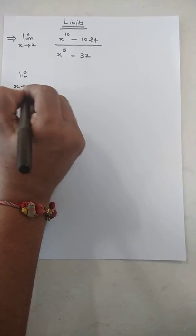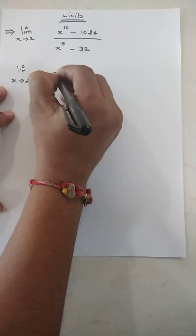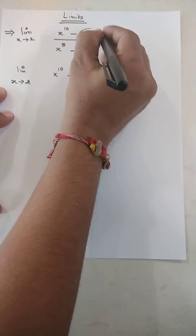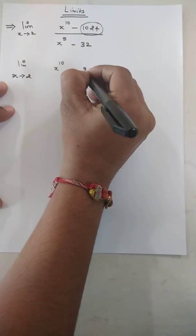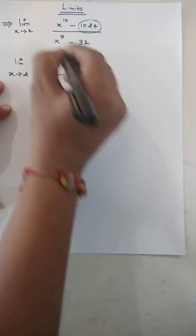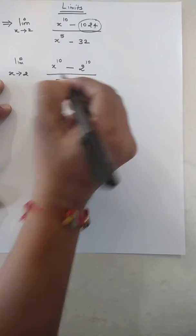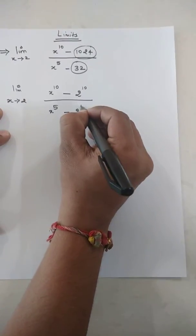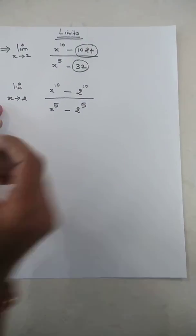So now first thing is that limit x tends to 2, x raised to 10 minus 1024 we can write as 2 raised to 10. So denominator x raised to 5 as it is, minus 32 we can write as 2 raised to 5.